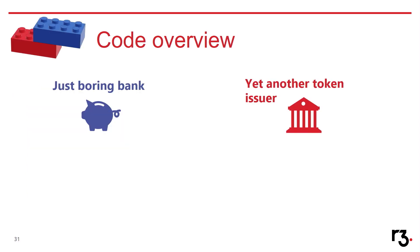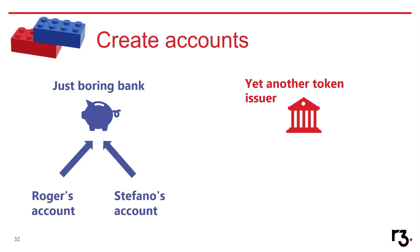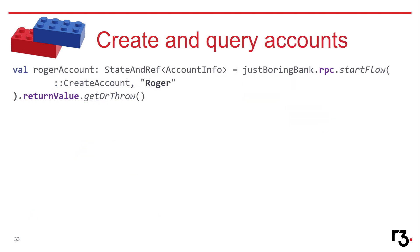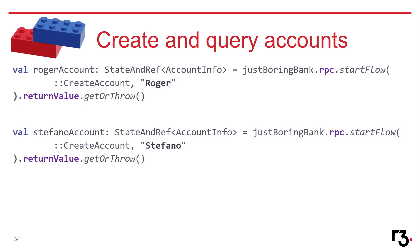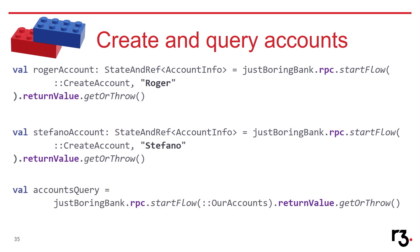Let's move to the code sample — it will be pretty quick and simple. I have two nodes: one is bank, the other is issuer. We will open two accounts at the bank node: Roger's and Stefano's account. As you can see, we do an RPC call, start for create account with 'Roger', and it returns a state and ref account info that already has all the information about the host and unique identifier for the account. Same for Stefano. This is also how you can see what accounts you have on your node — you can either call the flow or call the account service.